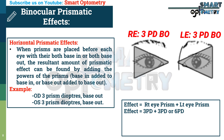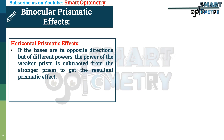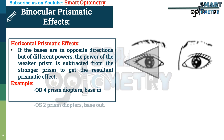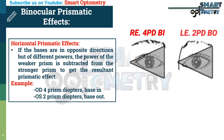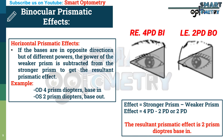So if we place 3 prism diopters base-out in the right eye and 3 prism diopters base-out in the left eye, then the total prismatic effect will be 6 prism diopters base-out. If the bases are in opposite directions but of different powers, the power of the weaker prism is subtracted from the stronger prism to get the resultant prismatic effect. Example: right eye 4 prism diopters base-in, left eye 2 prism diopters base-out. The prisms are placed horizontally with their bases in opposite directions, so the resultant prismatic effect will be 4 minus 2 = 2 prism diopters base-in in the right eye.